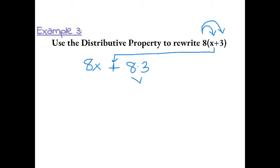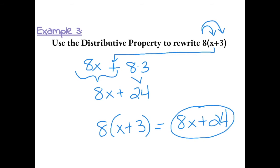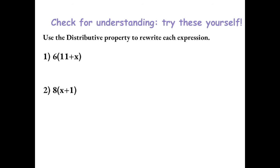8 times 3 can be simplified to 24. Bring everything else down, we get 8x plus 24. So 8 times the sum of x plus 3 is equal to 8x plus 24 by the distributive property. Pause the video here and try these yourself to check for understanding.